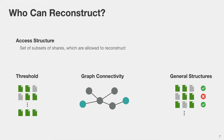More generally, we can consider arbitrary general access structures, which one can simply think of as a truth table of sorts, where every row corresponds to one of the possible subsets of n shares. A check mark means that this specific subset is authorized, whereas a cross means that it is not. The corresponding access structure is the collection of all subsets with a check mark.